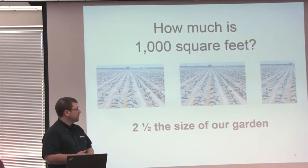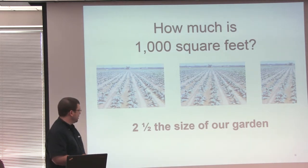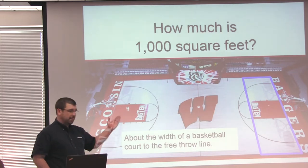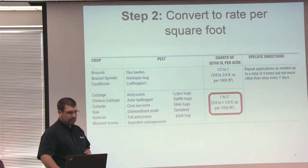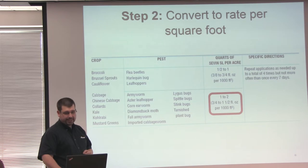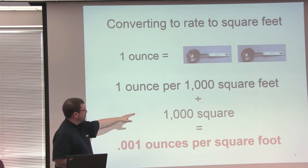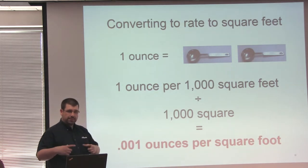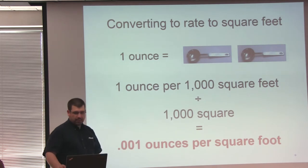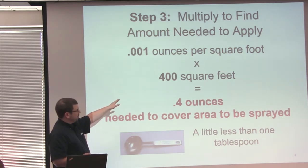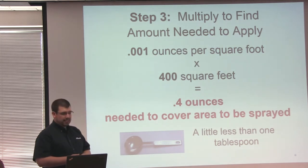The label says per 1,000 square feet — how much is that relative to our garden size? It equates to about two and a half of our gardens, or about the width of a basketball court all the way to the free throw line. We found out that we need 3 quarters to 1.5 fluid ounces per 1,000 square feet, and we'll be using the 1 ounce rate. One ounce is about 2 tablespoons. So we take 1 ounce per 1,000 square feet — that's our rate — divided by 1,000 square feet to get the square foot rate, and we get 0.001 ounces per square foot. Now we multiply that rate times our area of 400 square feet, and we get 0.4 ounces needed to cover the area sprayed.